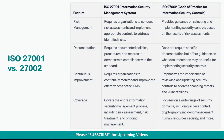ISO 27001 requires organizations to conduct risk assessments and implement appropriate controls to address identified risks. ISO 27002 provides guidance on selecting and implementing security controls based on the results of risk assessments.